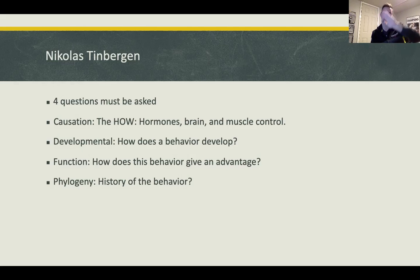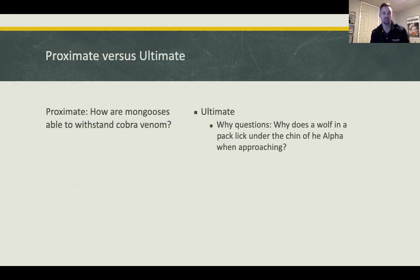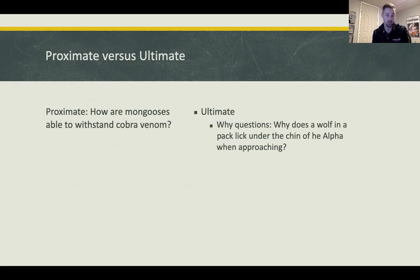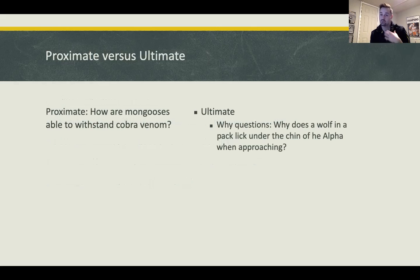On this slide we'll talk about proximate versus ultimate. Proximate is the 'how' — not the why, but how things work. For example, how are mongooses able to withstand cobra venom? The ultimate question is the 'why' — like why does a wolf in a pack look under the chin of the alpha when approaching.